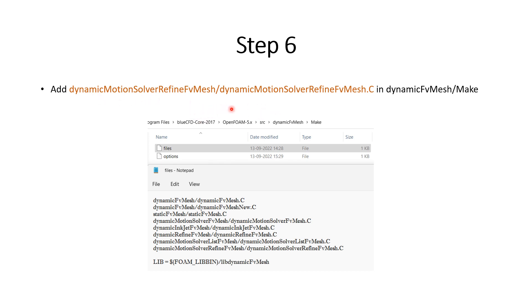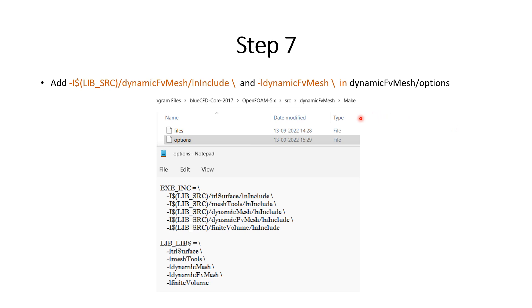Step 6: we need to list the new .C file in the make files. As we can see, at the end of the files list in SRC/dynamicFvMesh/Make/files, I have added one line for the new dynamicMotionSolverRefineFvMesh .C file. We go into that make files entry and add this last line.